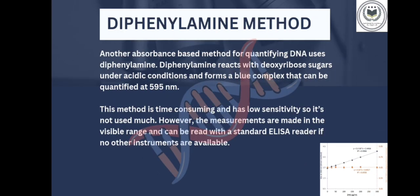Diphenylamine method. Another absorbance-based method for quantifying DNA uses diphenylamine, which reacts with deoxyribose sugar under acidic conditions and forms a blue complex that can be quantified at 595 nanometers. This method is time-consuming and has low sensitivity, so it's not used much. However, the measurements are made in the visible range and can be read with a standard ELISA reader if no other instruments are available.